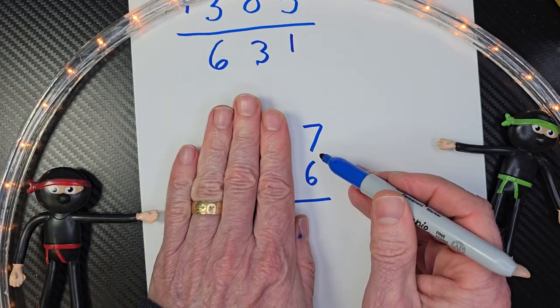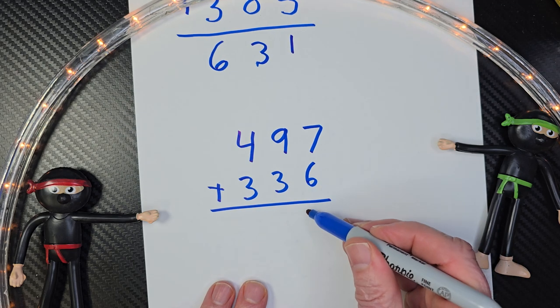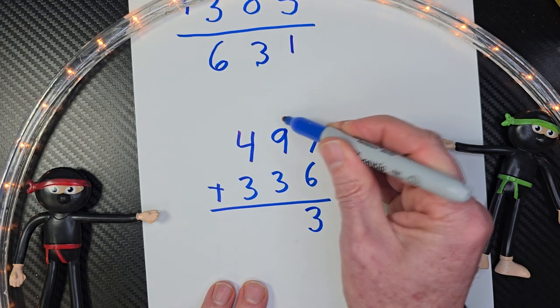Now, if you don't need to cover it up, that's fine. We're going to start with the ones. Seven plus six is thirteen. I put the three here, carry the one.